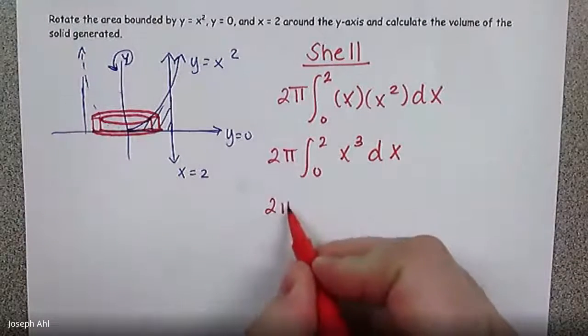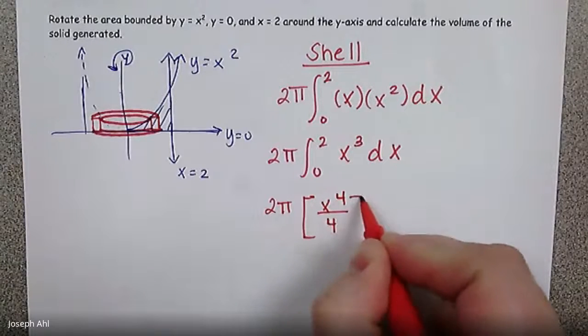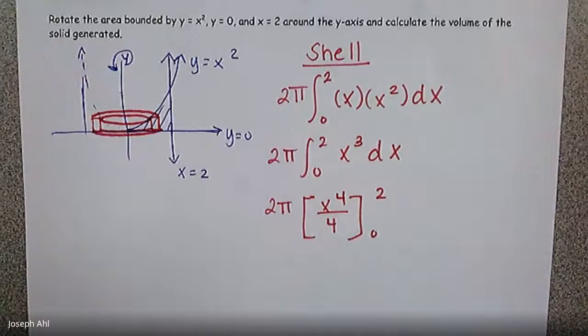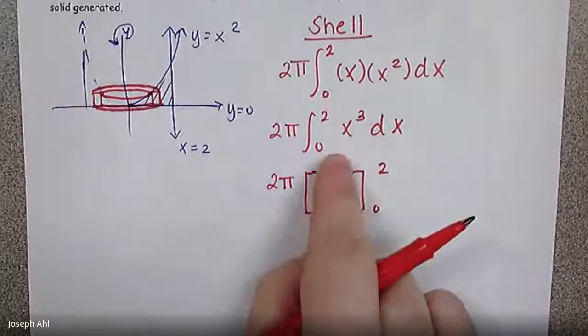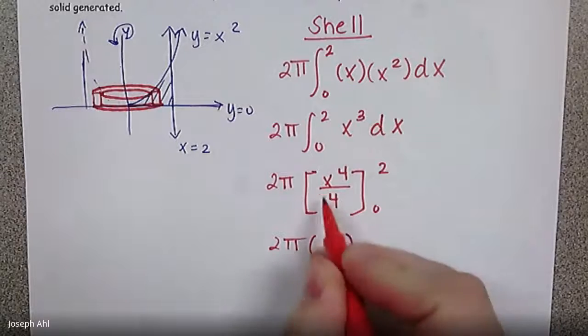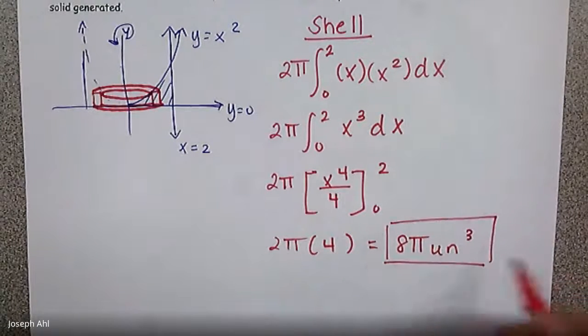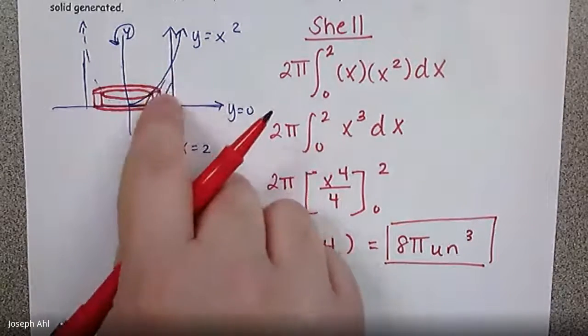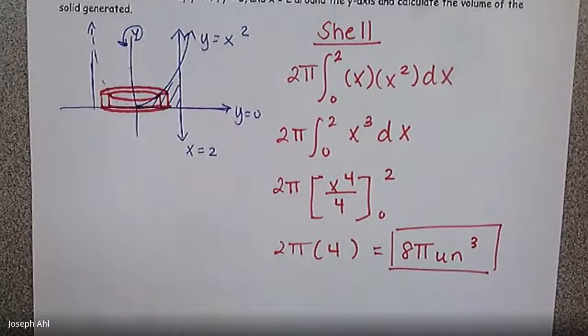So we're going to get this volume pretty quickly by using anti-power rule x to the fourth over 4 from 2 to 0. So if I plug in those bounds, 2 is going to give you 16 over 4, which is 4. So 2π times 4, it would be minus 0. So we don't have to write that. So we get 8π cubic units from taking this region right here, spinning it around the y axis. And that's using our shell technique.